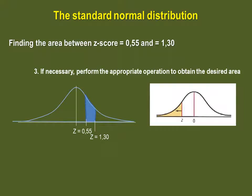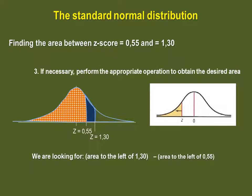This case is a bit trickier because we are looking for an area between two Z-scores. You could see it like this. We're looking for the area to the left of Z-score 1.30, to which we will subtract the area to the left of Z-score 0.55. This will give us the final result we are looking for, which is 19.44%.